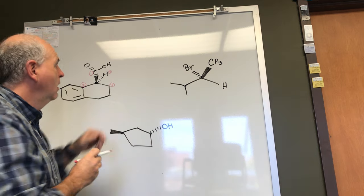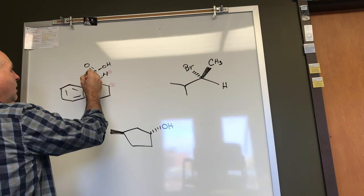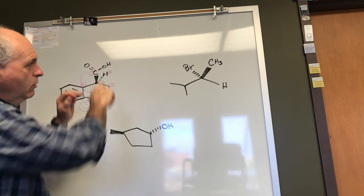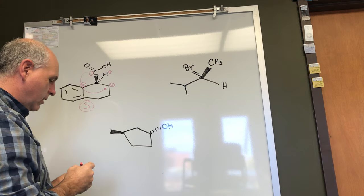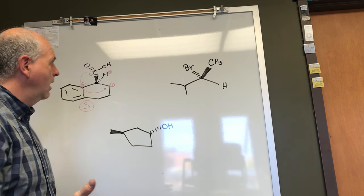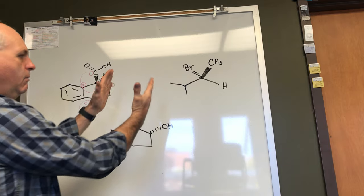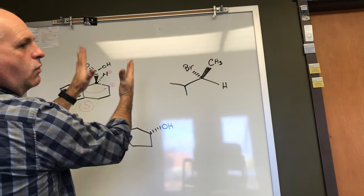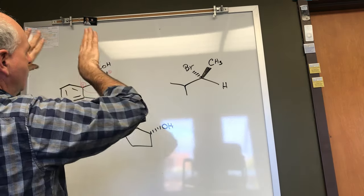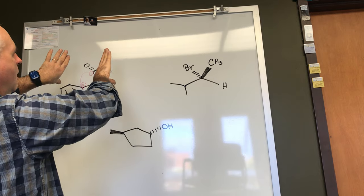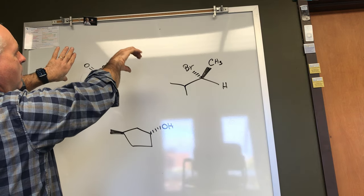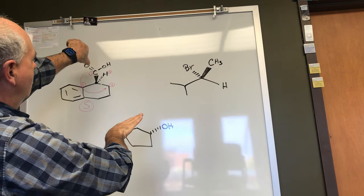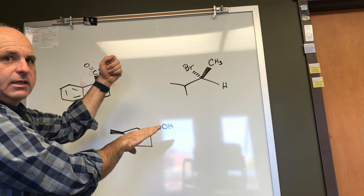This is an easy example because the hydrogen is pointing away from us. From that viewpoint, if you go from one to two to three in a counterclockwise direction, that would be the S configuration; clockwise would be R. To use your hands: imagine your thumb as the lowest priority group — hydrogen is pointing away, so stick your thumb into the board. Going from one to two to three requires your left hand to curve in that direction, so left hand means S configuration.